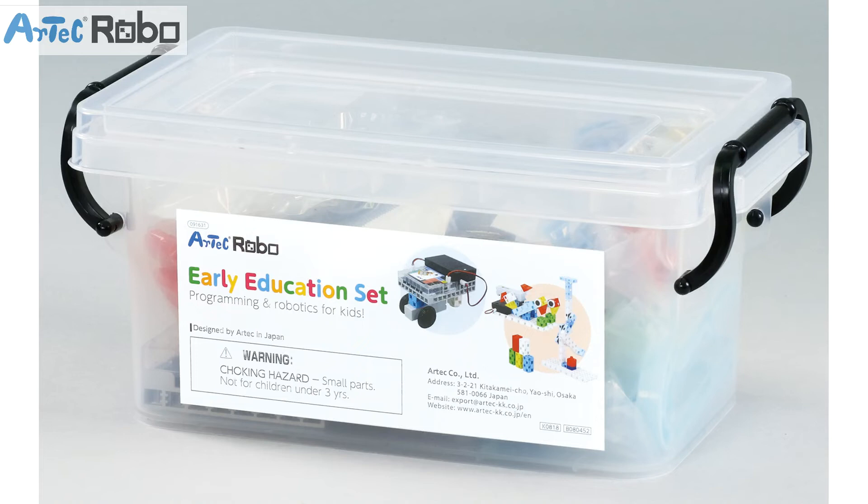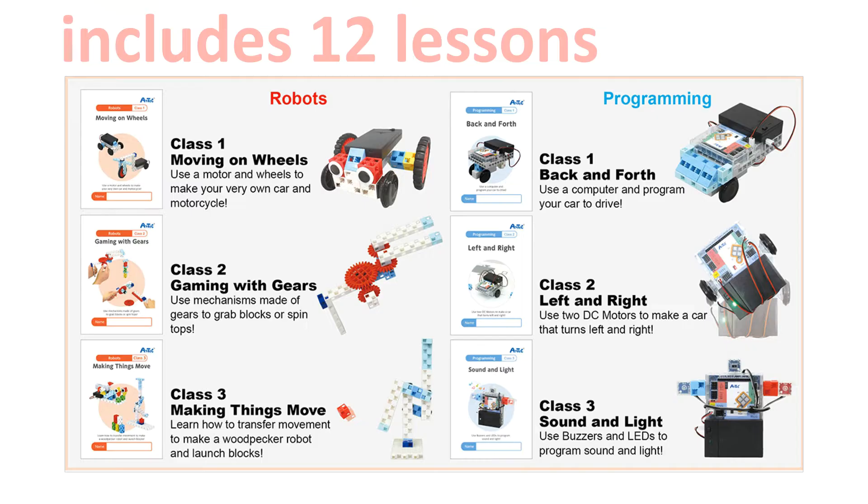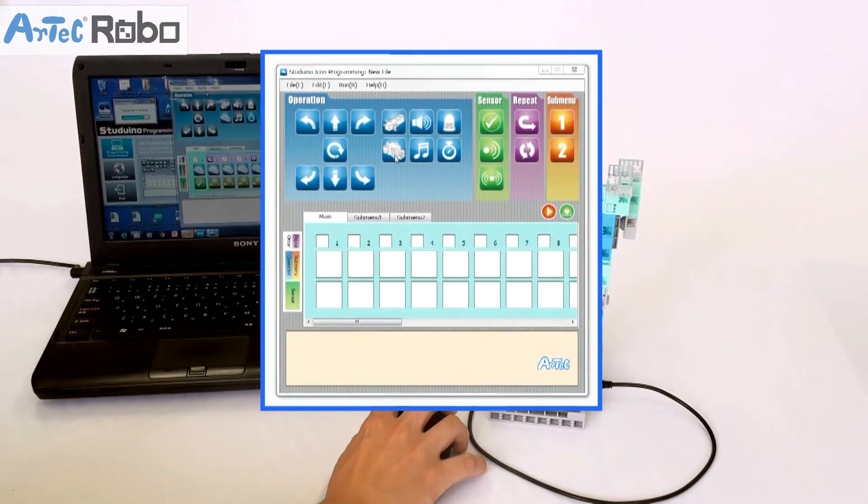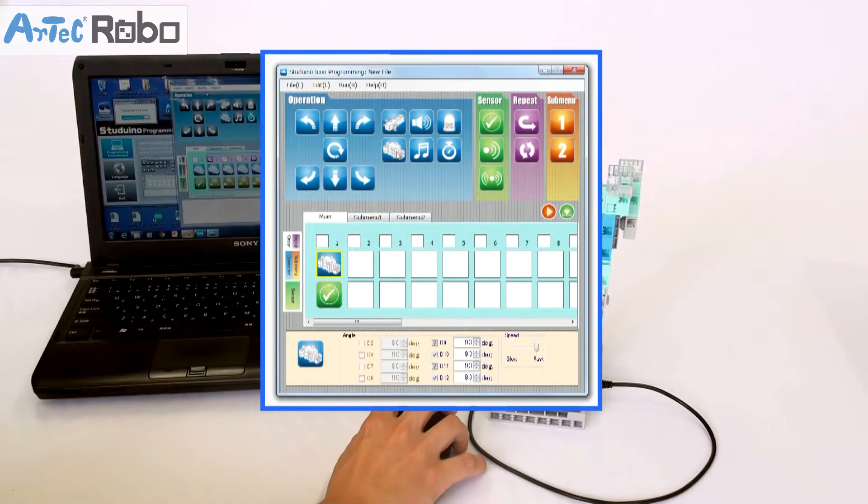Early Education Set covers two subjects, robotics and programming. With six lessons per subject, there are a total of twelve lessons covered in six textbooks. Basic programming concepts would be introduced using our original picture-based icon programming environment.